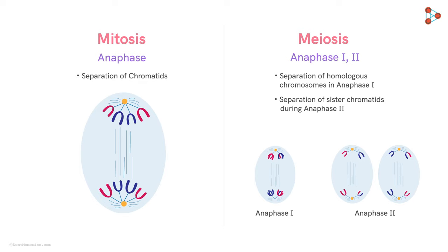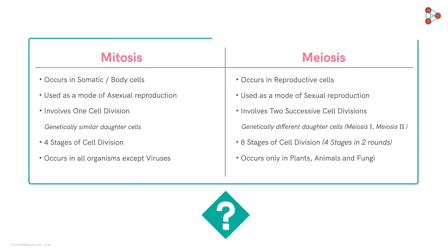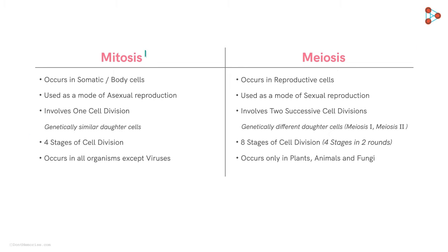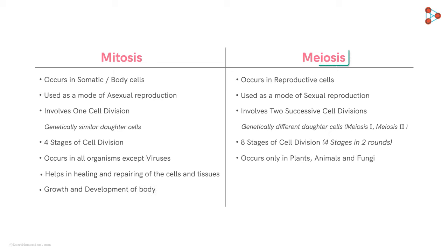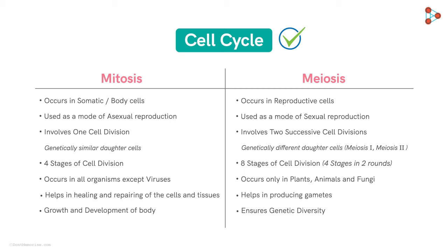Those were the major differences between mitosis and meiosis, which can be summarized in a single table. Mitosis helps in the healing and repairing of cells and tissues of our body, and is also responsible for the growth and development of the body. Meiosis, however, helps exclusively in producing gametes, which ensures genetic diversity. And with this, we come to an end of the concept of cell cycle. To learn more cool concepts related to cell processes, keep surfing on the waves of cell biology. Happy learning!